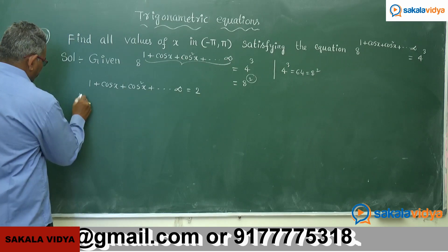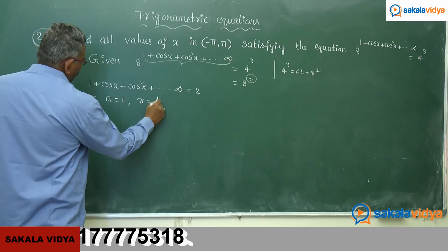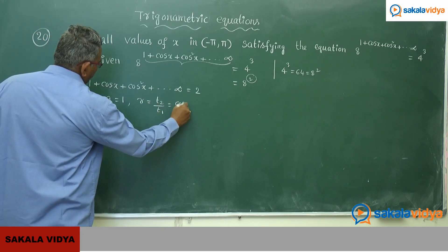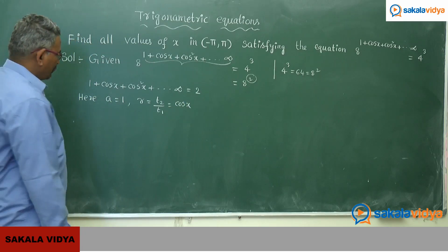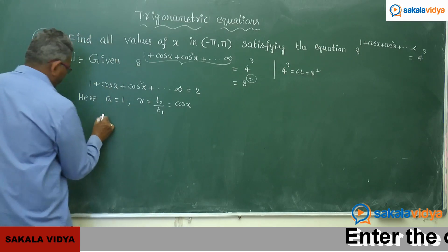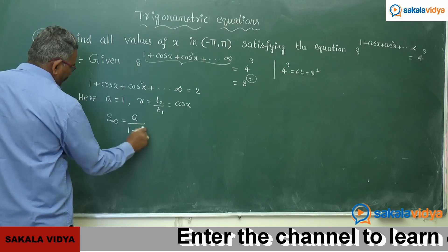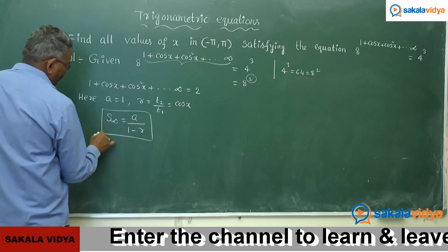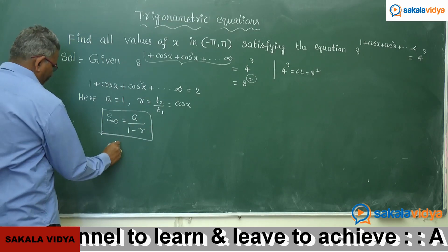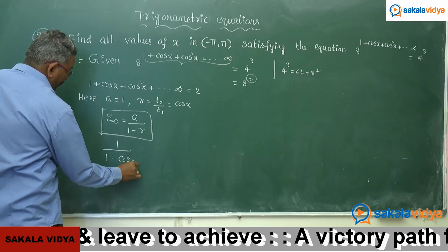Here, the first term a equals 1 and the common ratio r equals T₂ divided by T₁, that is cos x divided by 1, so r equals cos x. Applying the sum to infinity formula, S infinity equals a divided by 1 minus r, which gives 1 divided by 1 minus cos x, and this equals 2.